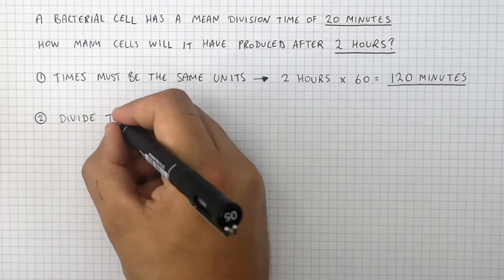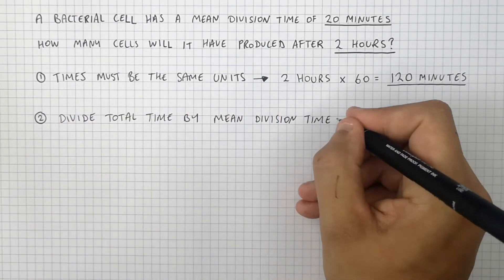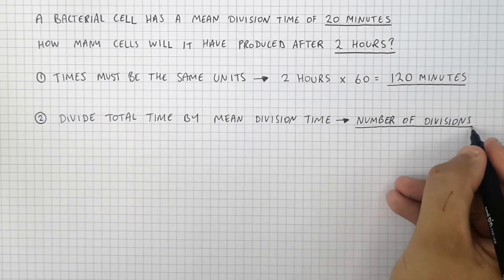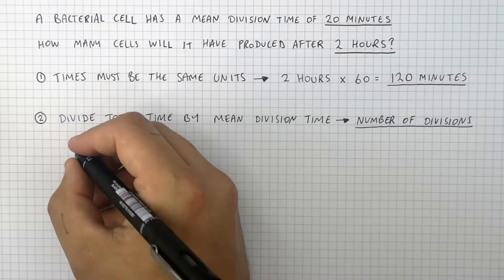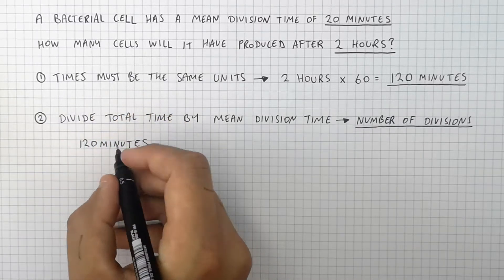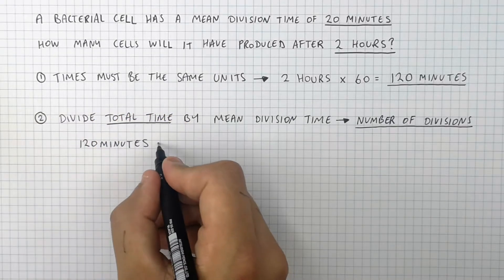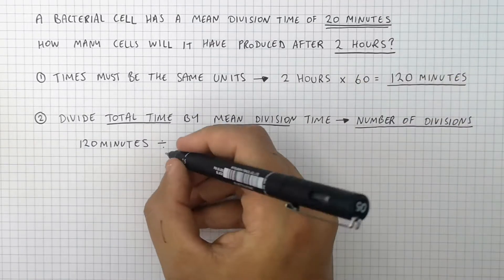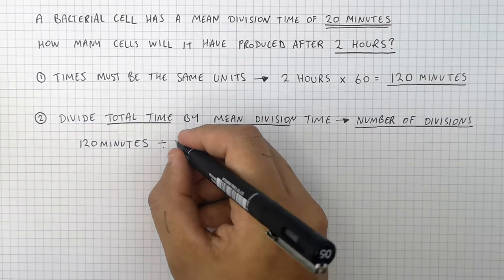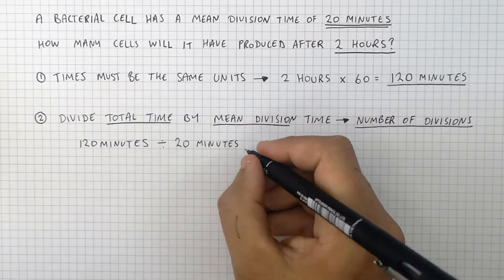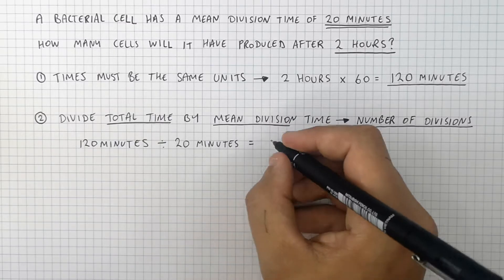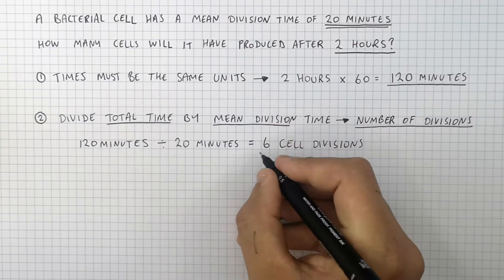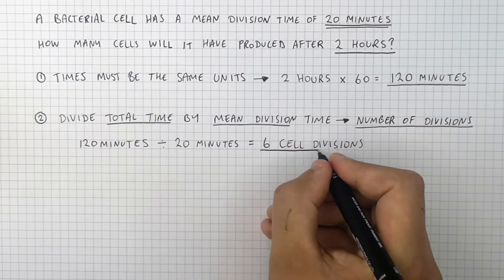You'll then divide the total time by the mean division time. That will give you the number of divisions. So you want to divide the total time, which is 120 minutes, by the mean division time, which is 20 minutes. So you do 120 minutes divided by 20 minutes. That will give you the number of cell divisions, which will be 6 cell divisions. So in this time, the bacterial cell will divide 6 times.